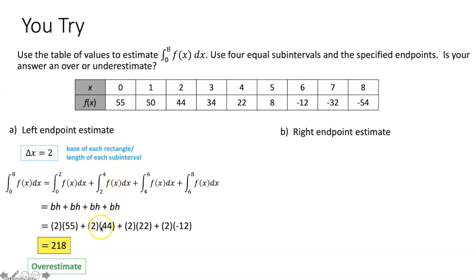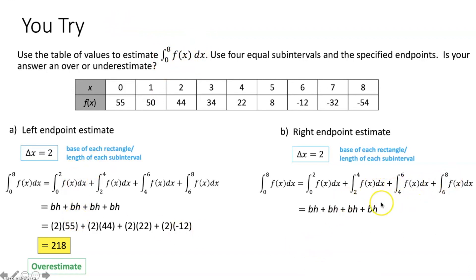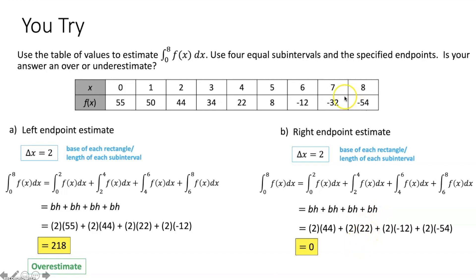For the right endpoint estimate on the same integral, we use the y value at the right endpoint of each subinterval: forty-four, twenty-two, negative twelve, and negative fifty-four. Each rectangle still has a base of two. Summing: two times forty-four plus two times twenty-two plus two times negative twelve plus two times negative fifty-four equals zero. Since the function is decreasing and we're using a right endpoint approximation, this is an underestimate.